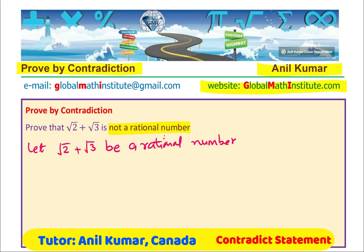So we want to prove something and we contradict it. Let it be a rational number. Now the idea is, we have to logically follow some steps so that we could contradict this statement.